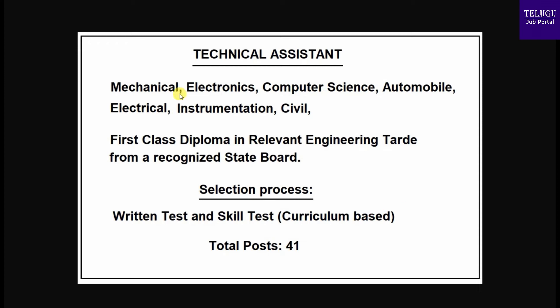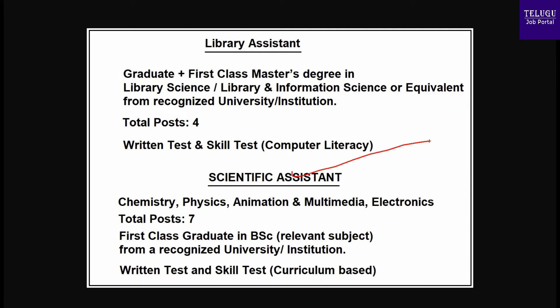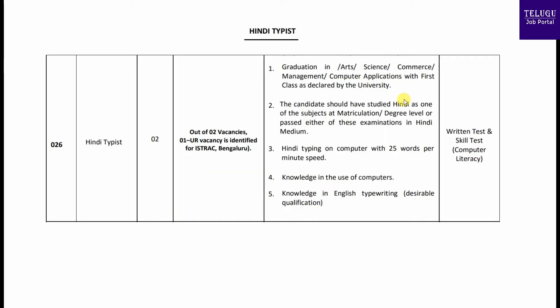Total 51 vacancies. Here is the Library post. In this post, you have to complete graduate computer and library qualifications, and a master's degree. Total 4 vacancies. And Scientific Assistant degree qualification is applied in this category: Chemistry, Physics, Animation, Multimedia, Electronics. You need to complete a BSc degree. Total 7 vacancies.